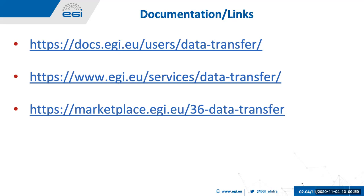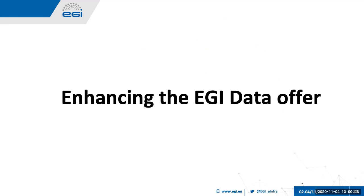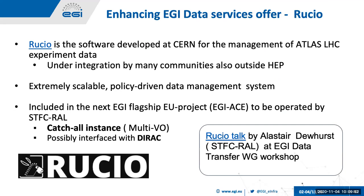The last part describes plans for new services in EGI. Starting with Rucio — software developed at CERN for management of ATLAS LHC experiment data, now used by many communities outside high energy physics. It is extremely scalable and offers policy-driven data management. It is going to be part of the EGI portfolio, included in the next EGI flagship project starting in January next year. It will be operated by STFC RAL with a catch-all multi-VO instance, and will possibly interface with Dirac as well.